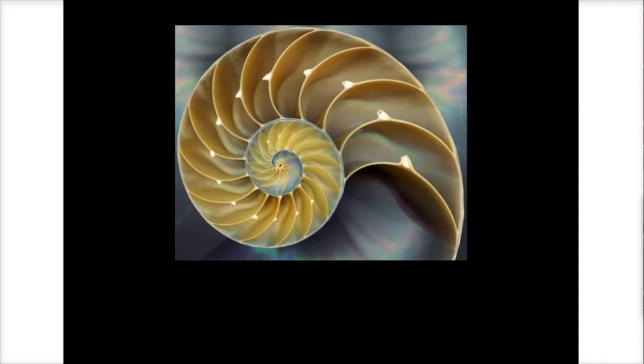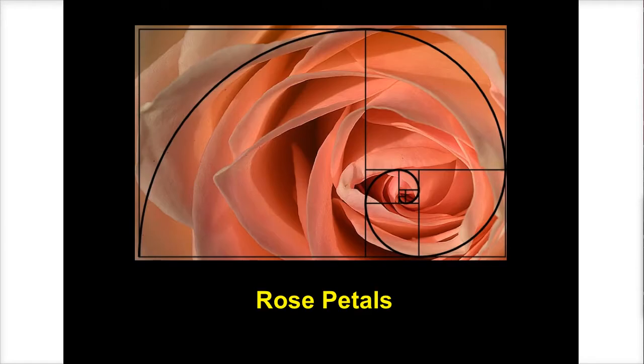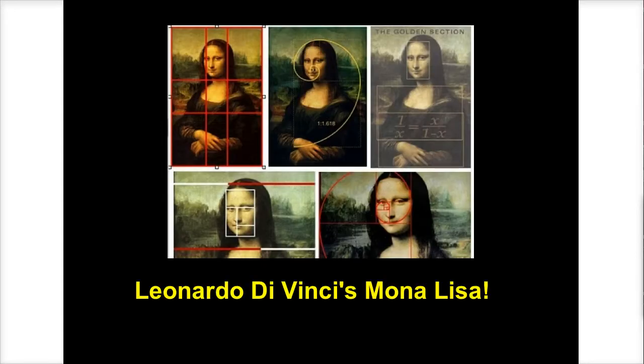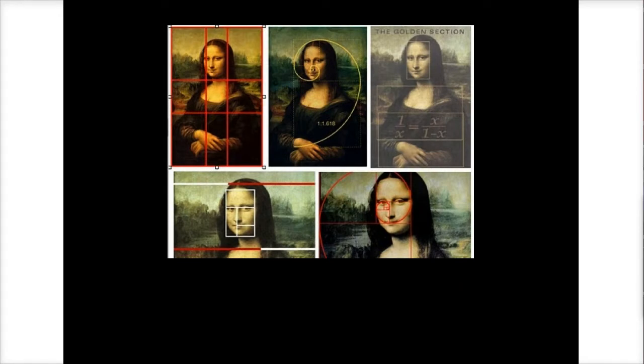So for example, we find it in a Nautilus seashell. We find it in the formation of a rose. We find it in hurricanes. And believe it or not, we also find the Fibonacci sequence in the great Leonardo da Vinci's famous painting of the Mona Lisa.